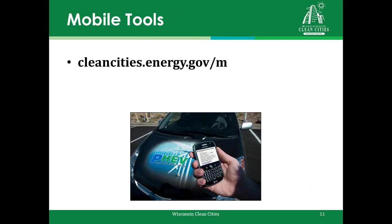All of these tools are available through your phone or tablet. The mobile site cleancities.energy.gov/m was specifically created for mobile use and works with any smartphone or tablet. You can locate alternative fuel stations, look up miles per gallon and carbon footprint information, compare fuel cost and emissions, and find truck stop electrification sites. It also allows access to all other Clean Cities website pages in a mobile-friendly format — so if you're on the go and need to find where to fuel up, you can pull over, pull up this site, and find what you need.